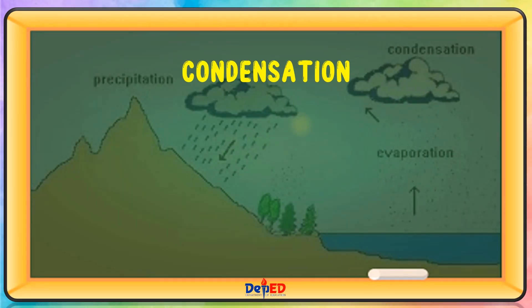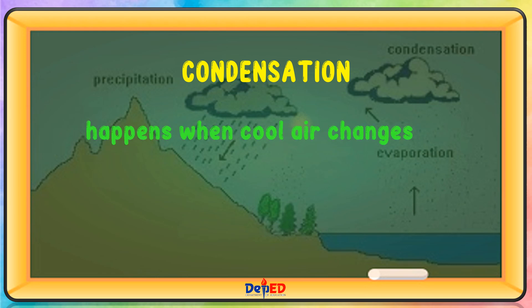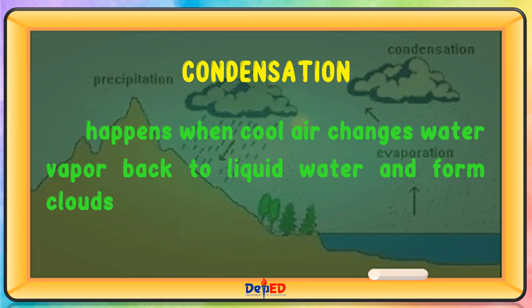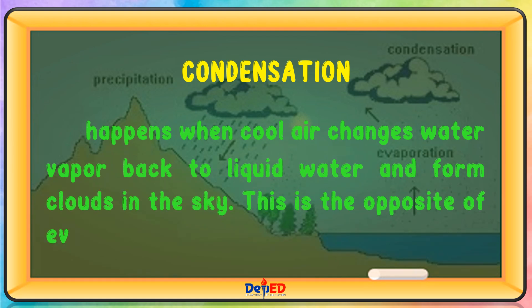Condensation happens when cool air changes water vapor back to liquid water and forms clouds in the sky. This is the opposite of evaporation.